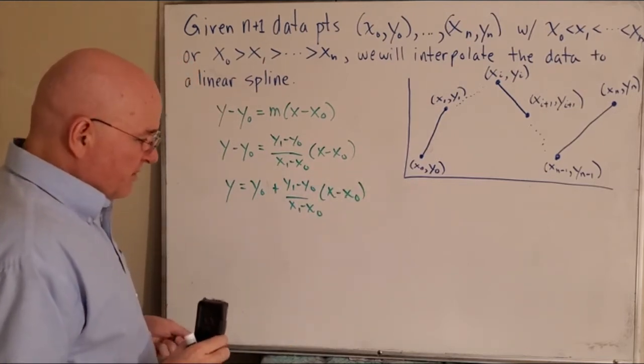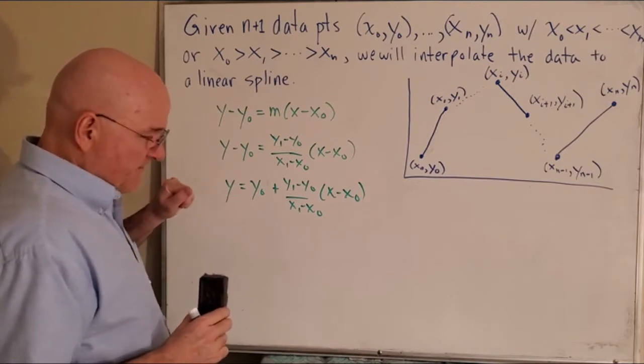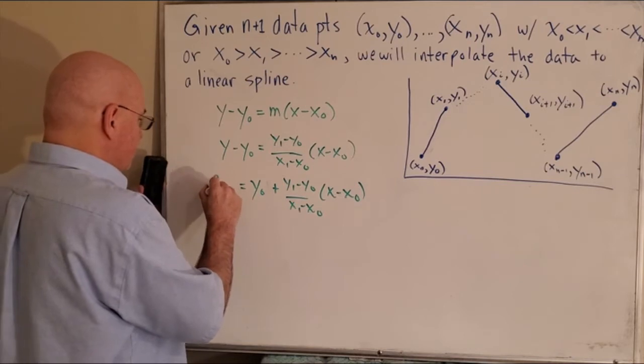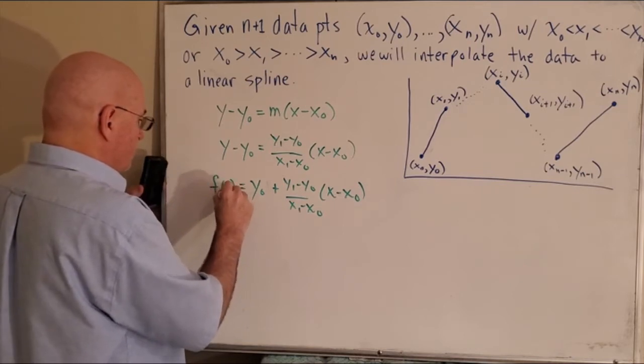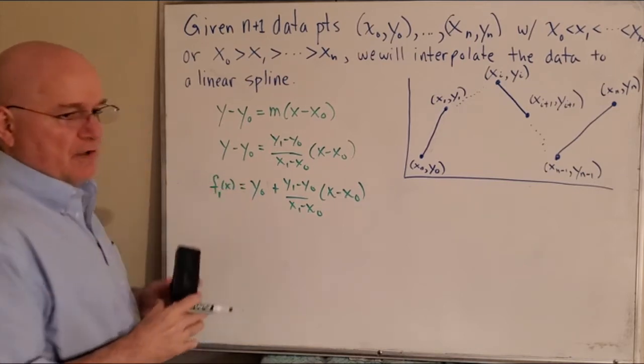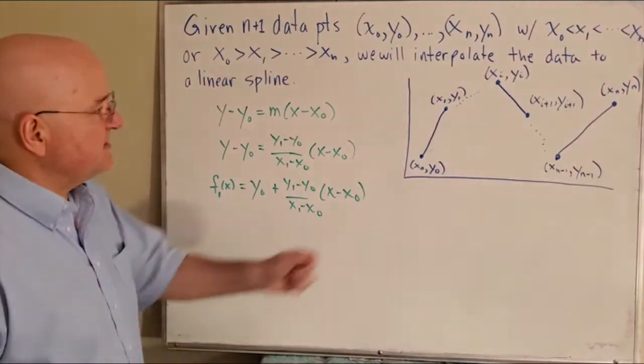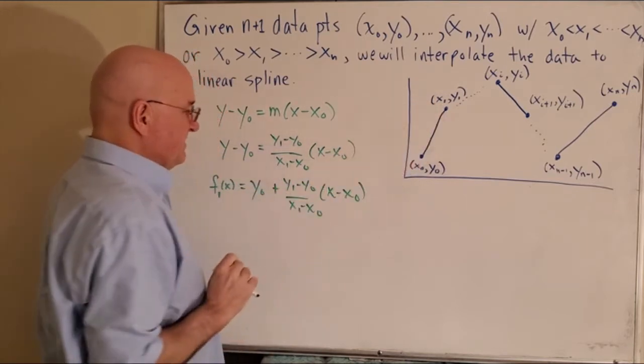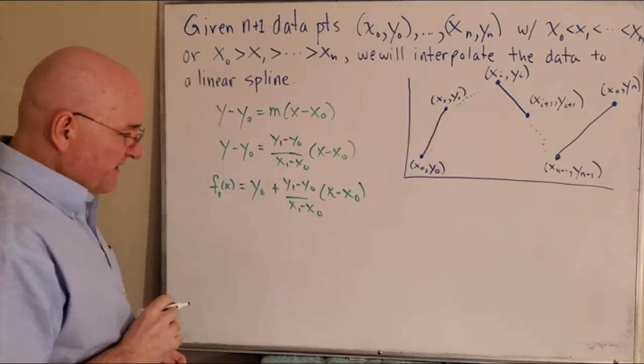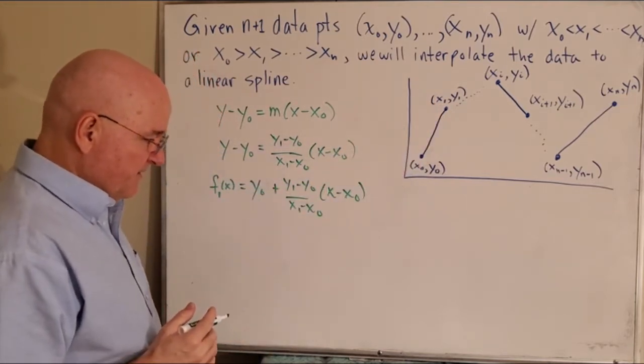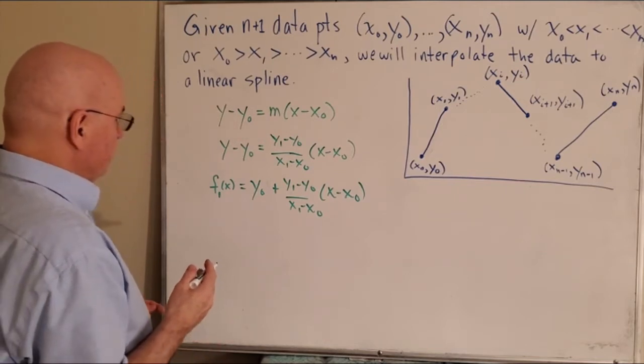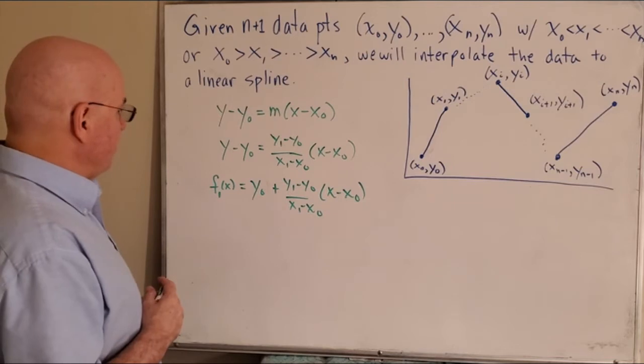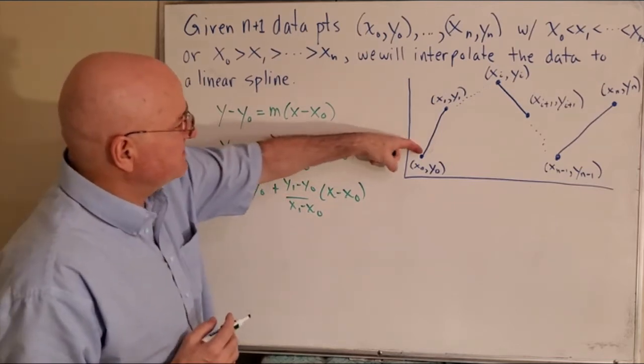And what I'm going to do now is I'm just going to take the y and call it f of x. And I'm going to call it f1 of x because that's only the function, the linear function between this point and that point. But that is essentially, is exactly the equation of the line between this point and this point.